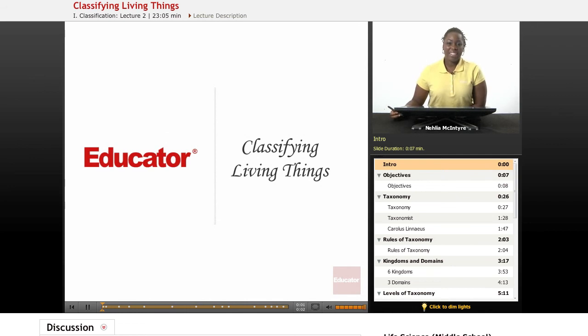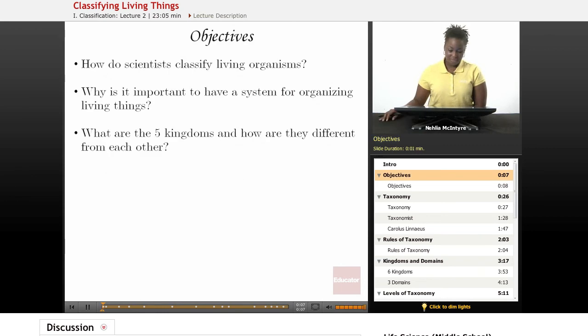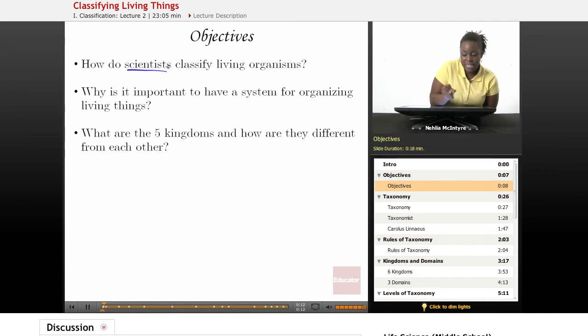Welcome back to Educator.com. This is the Life Science course, and today's lesson is on Classifying Living Things. Our objectives for this lesson will be: Number one, how do scientists classify living organisms? Number two, why is it important to have a system for organizing living things? And number three, what are the five kingdoms, and how are they different from each other?